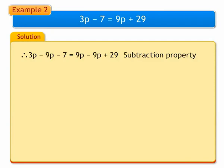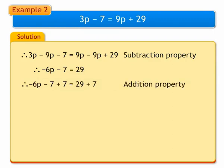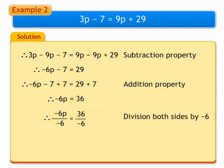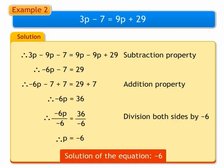On simplifying, we get minus 6x minus 7 is equal to 29. Using addition property, we get minus 6x minus 7 plus 7 is equal to 29 plus 7. We get minus 6x is equal to 36. Using division property, we divide by minus 6 on both sides. We get p is equal to minus 6. The solution to the equation is minus 6.